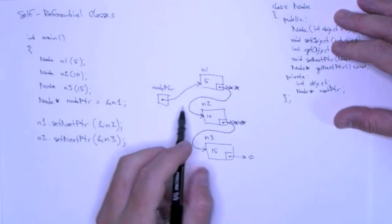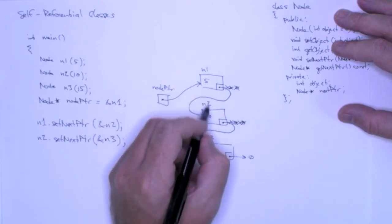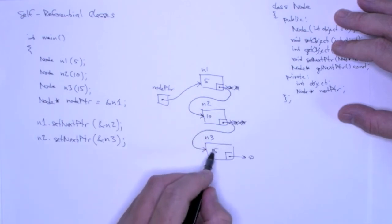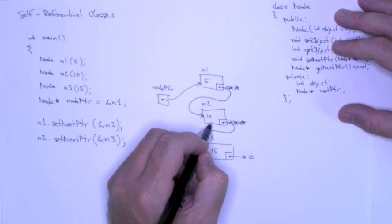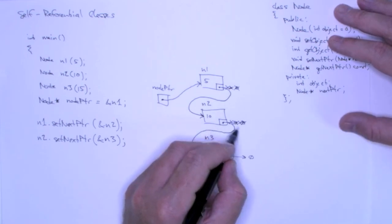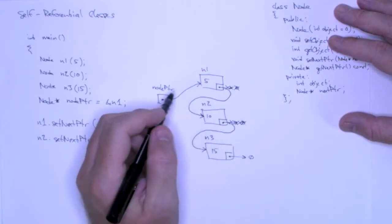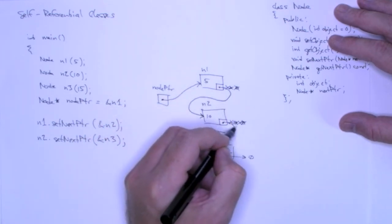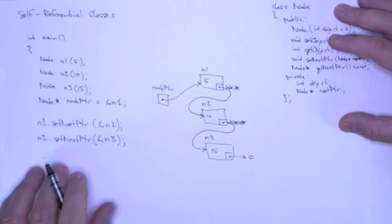Now notice that node pointer can point to any node. So it can point to n1, I can make it point to n2, I can make it point to n3. Just like this next pointer is pointing to n2, I could have also made it point to n3. I could have made this next pointer point to n1. And I'm going to use this node pointer to follow this chain of pointers, and I'm going to print the values out.